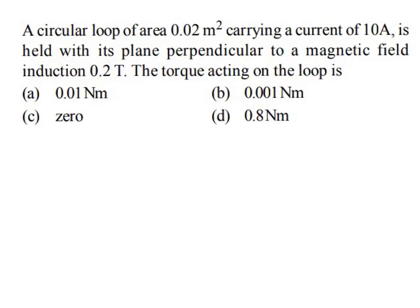Next problem: a circular loop of area 0.02 m² carrying 10 ampere is held with its plane perpendicular to a magnetic field of 0.2 tesla. The torque acting on the loop is zero, because when the magnetic field is perpendicular to the plane of the loop, there is no torque — the field must make an angle with the plane to produce torque.